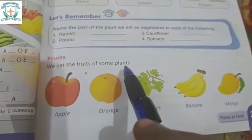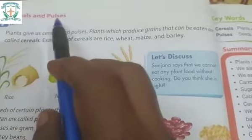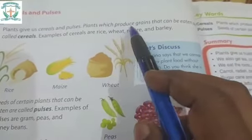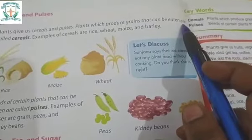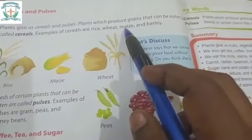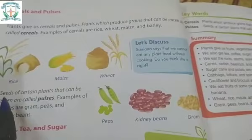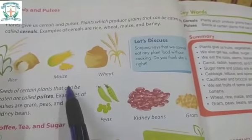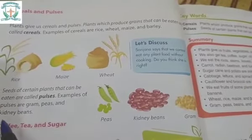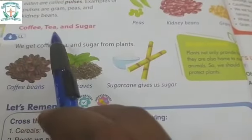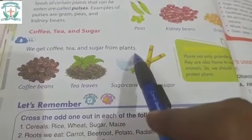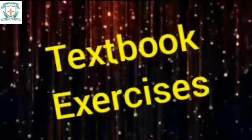Vegetables: We eat roots, stems, leaves, and flowers of plants as vegetables. Fruits: We eat the fruits of some plants. Cereals and Pulses: Plants give us cereals and pulses. Plants which produce grains that can be eaten are called cereals. Examples of cereals are rice, wheat, maize, and barley. Seeds of certain plants that can be eaten are called pulses. Examples of pulses are gram, peas, and kidney beans. Coffee, Tea, and Sugar: We get coffee, tea, and sugar from plants.